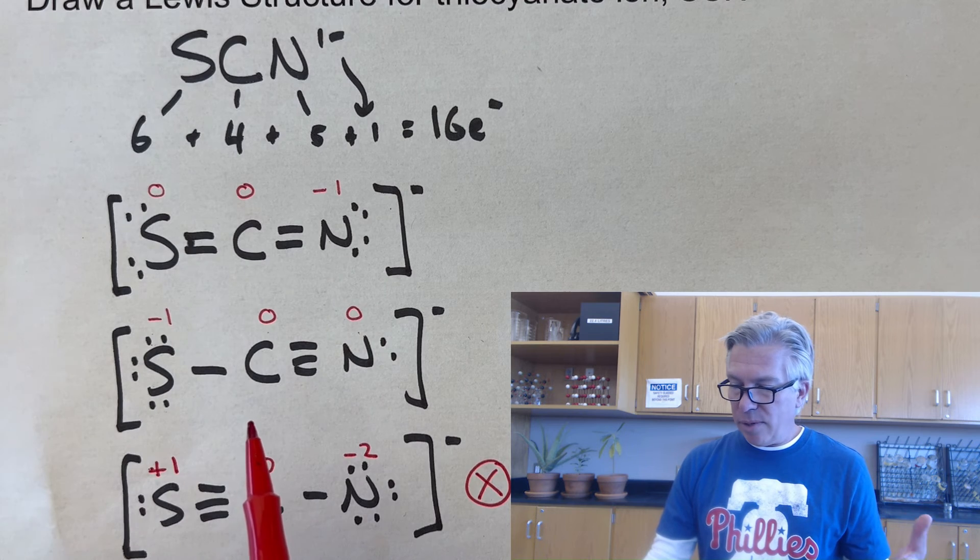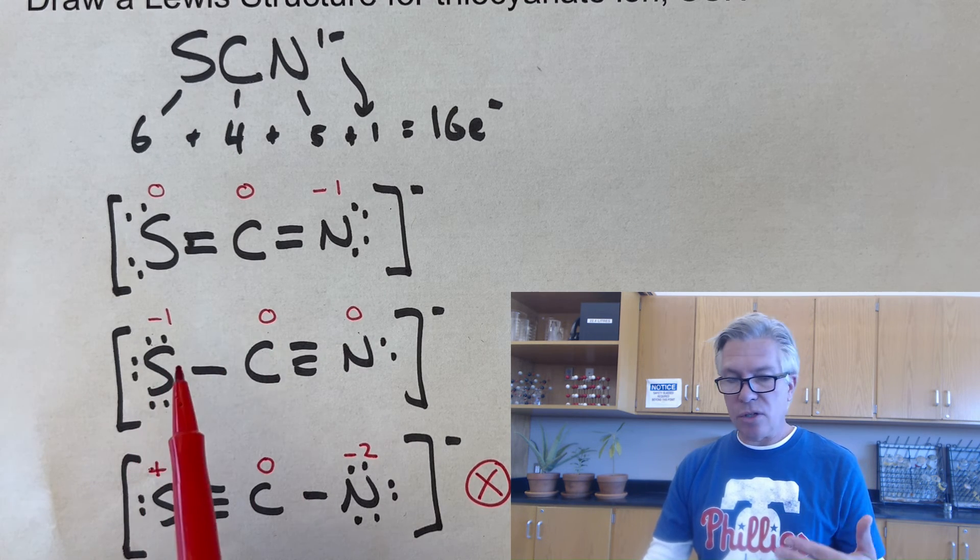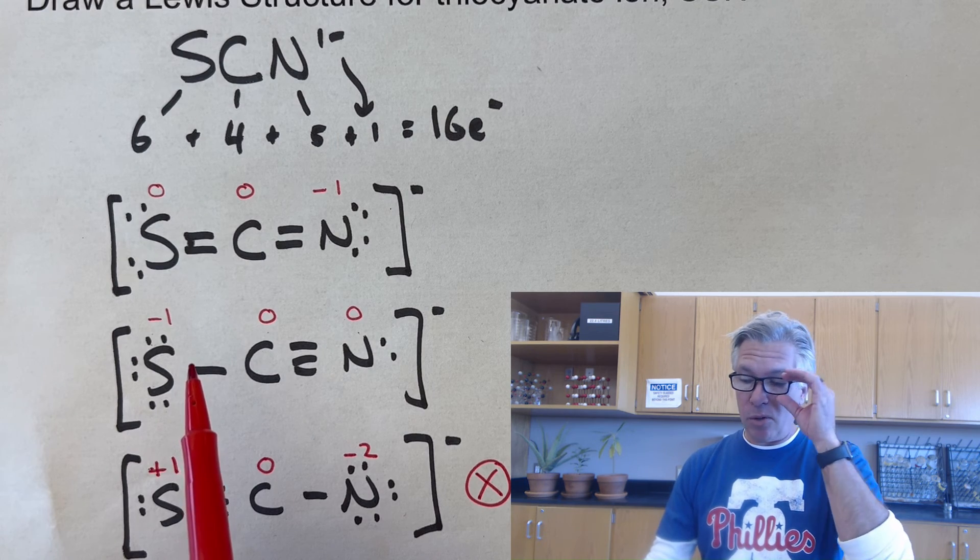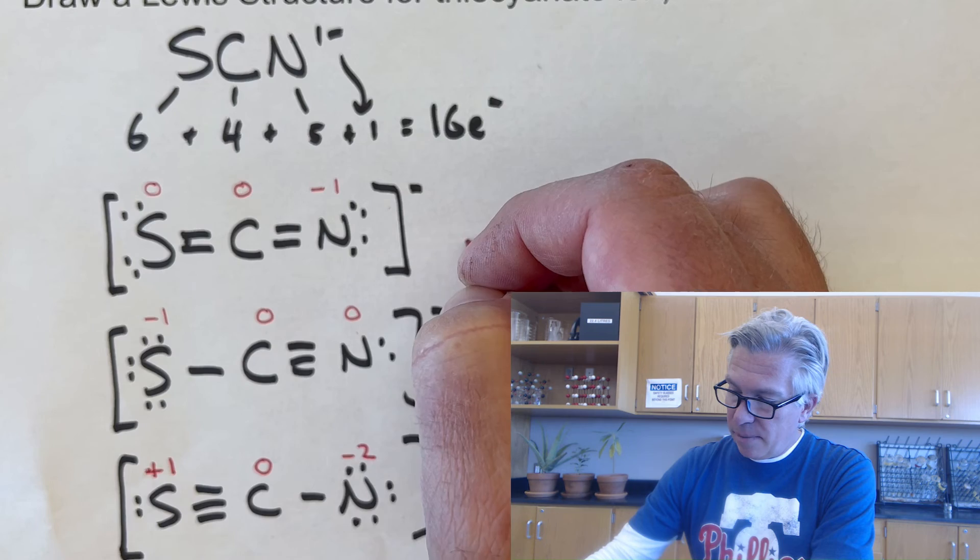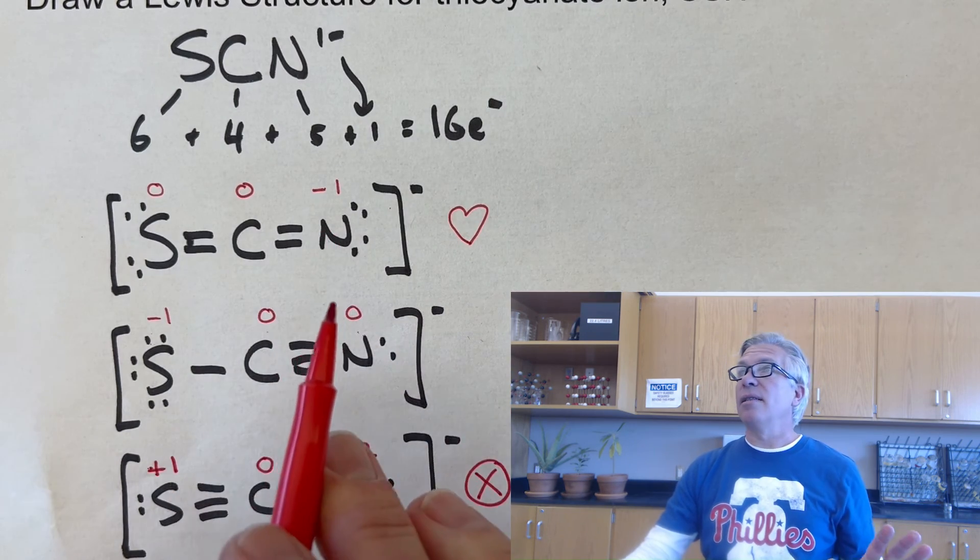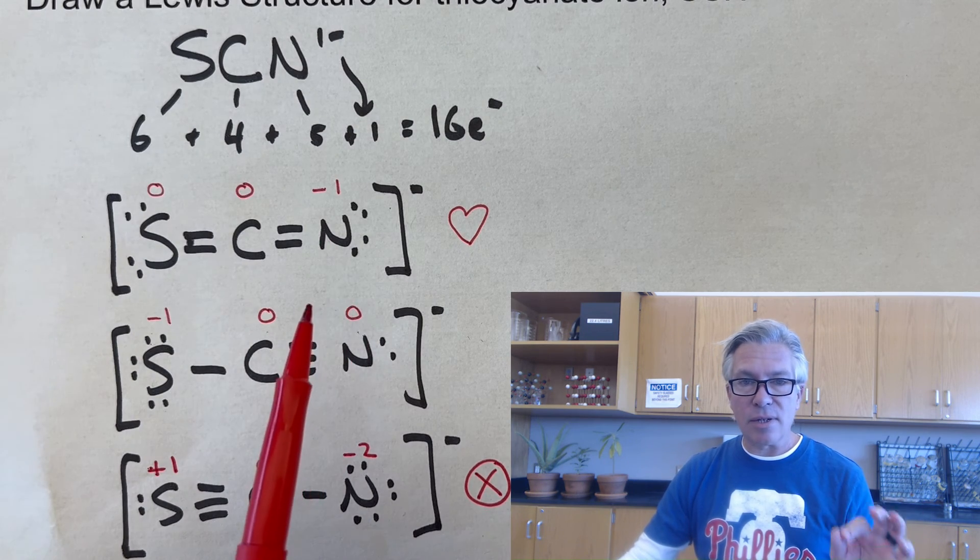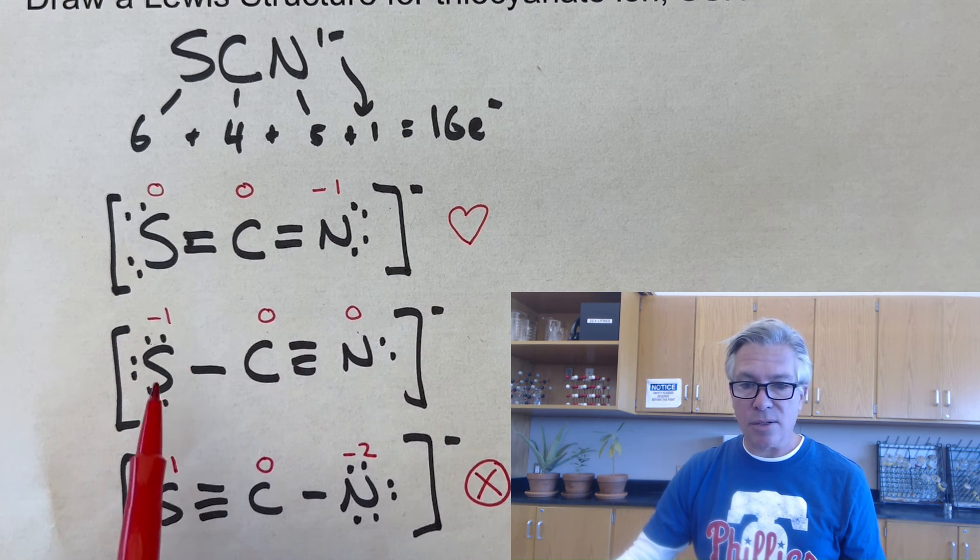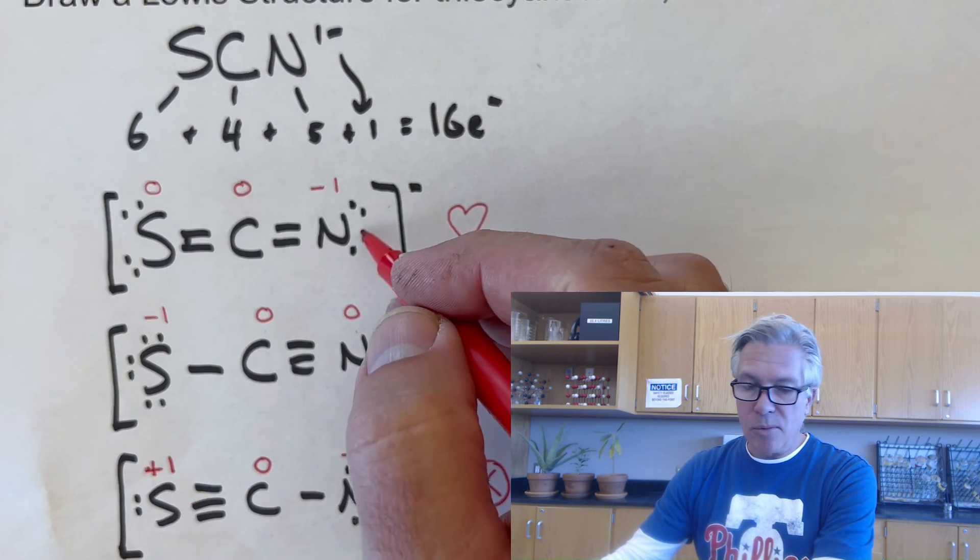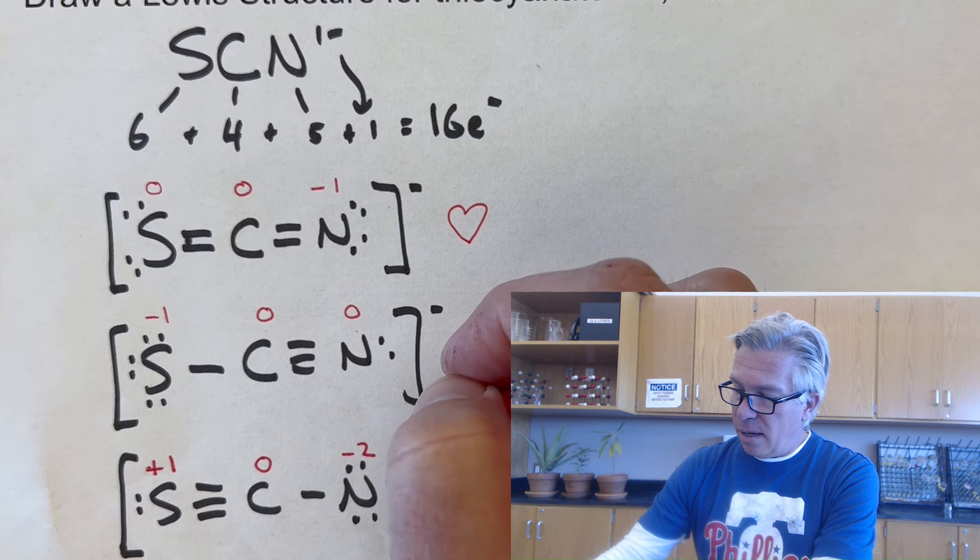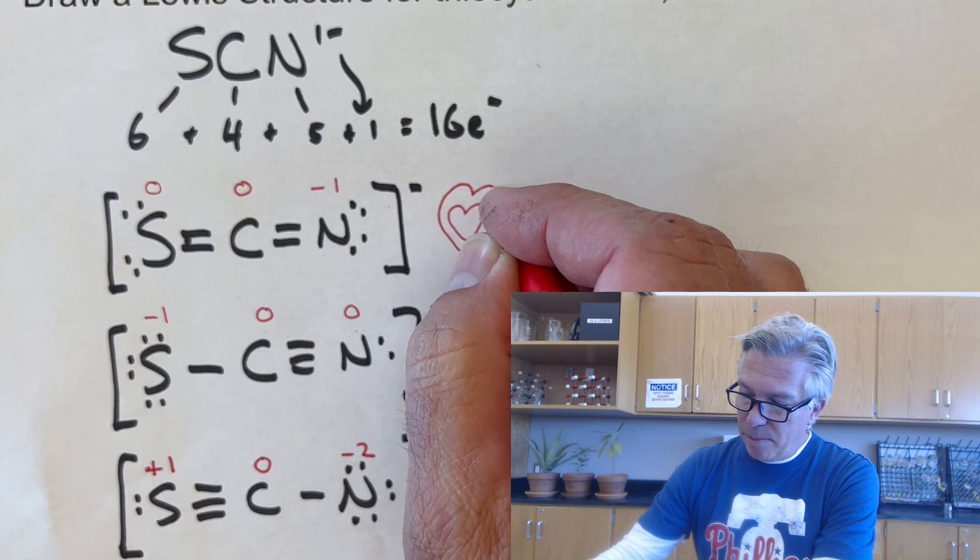They probably exist at some point or another, but I think that the better resonance structure to choose as the most favorable one is this one because the negative charge, if you're ever trying to decide this, pick whichever one has the negative charge on the most electronegative atom in the molecule. And in this case, nitrogen is more electronegative than sulfur, and so it's probably more likely to be on that one. This one is probably okay too, but I think if I was picking, I would probably pick that one.